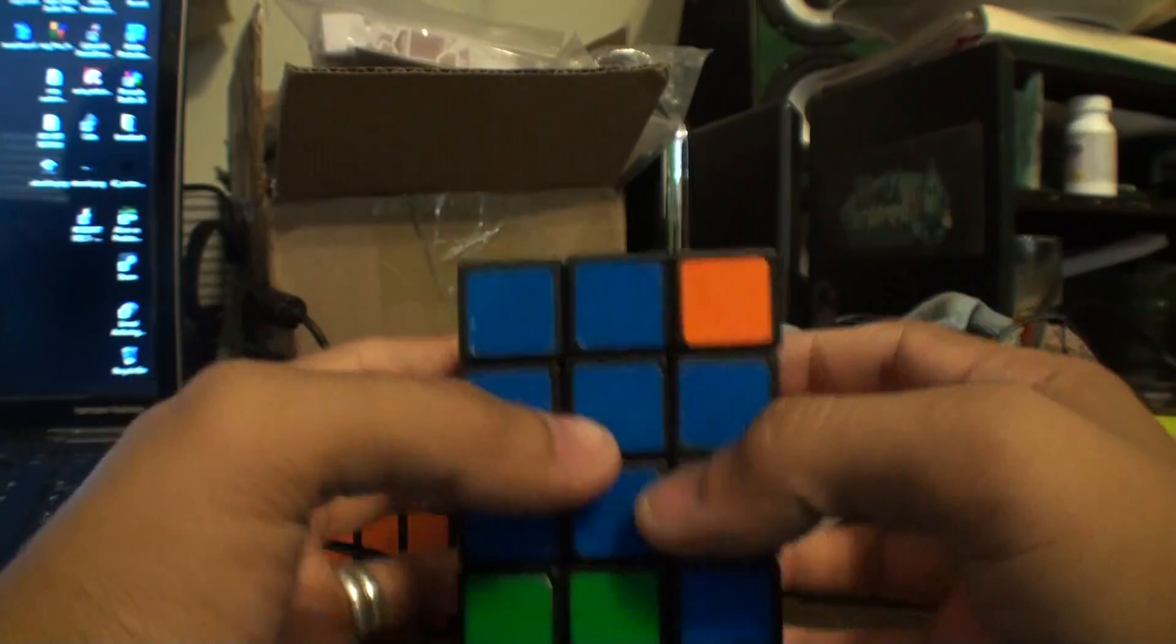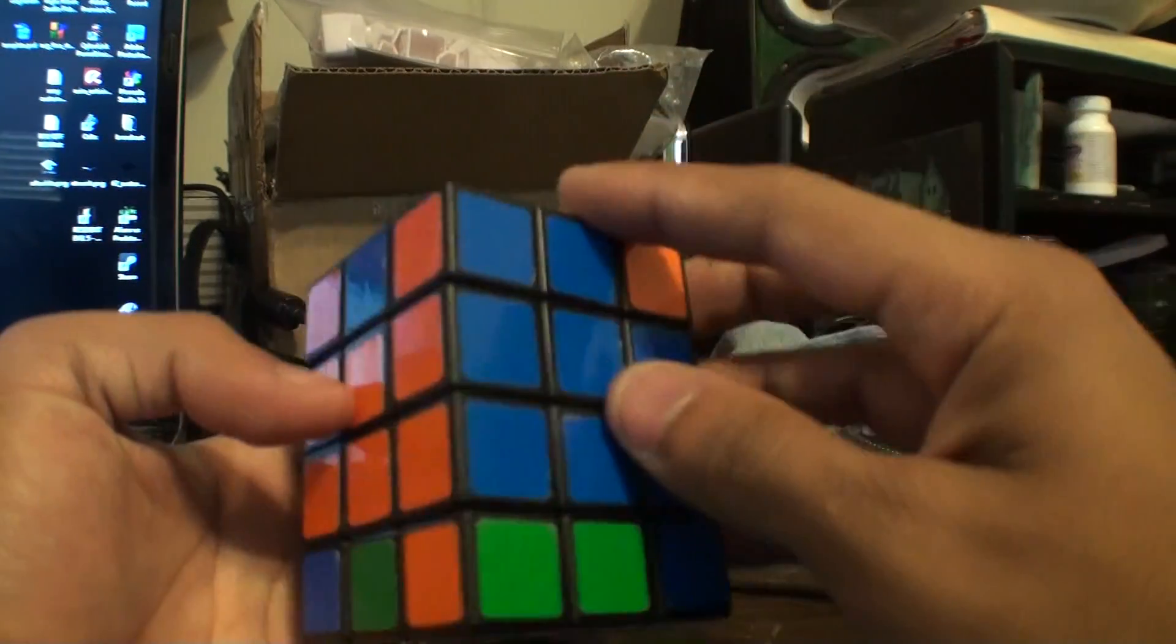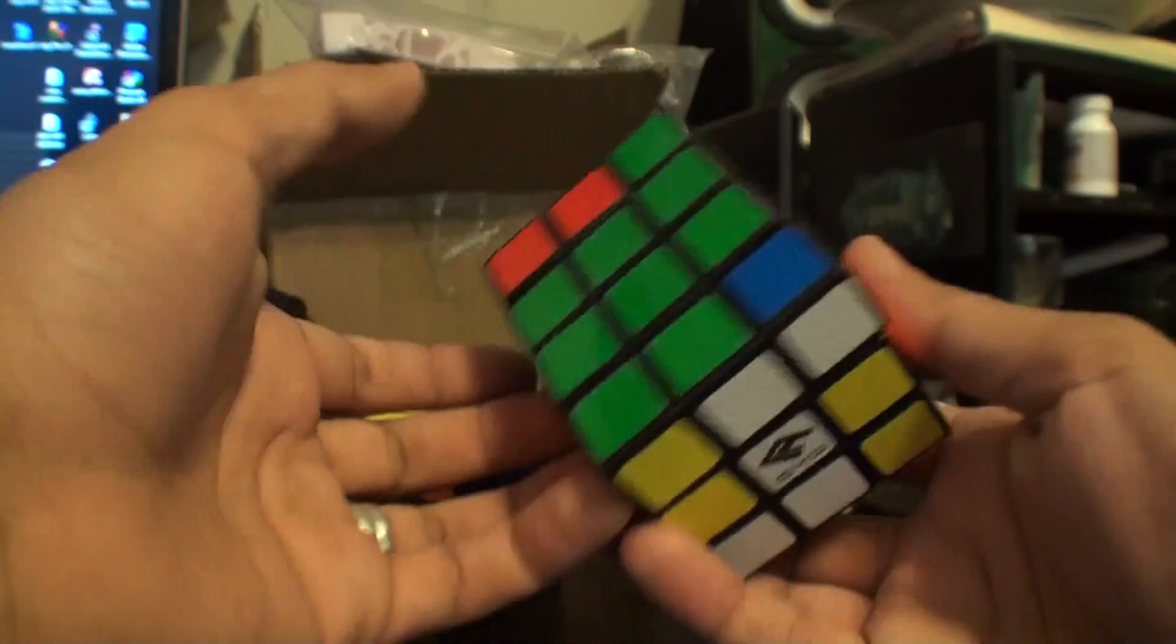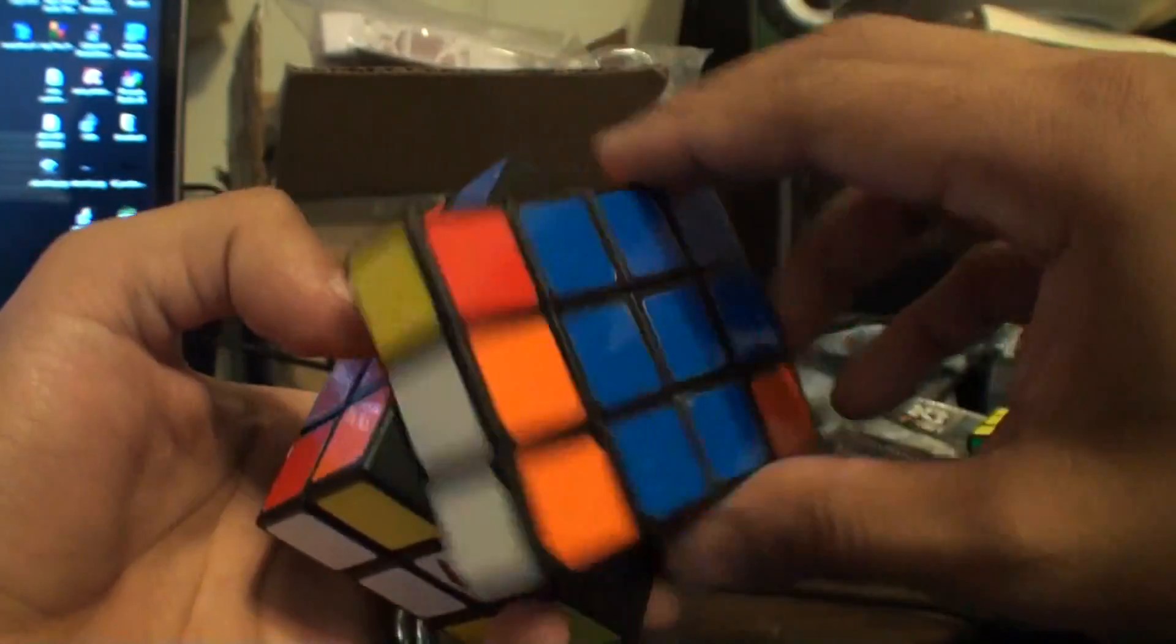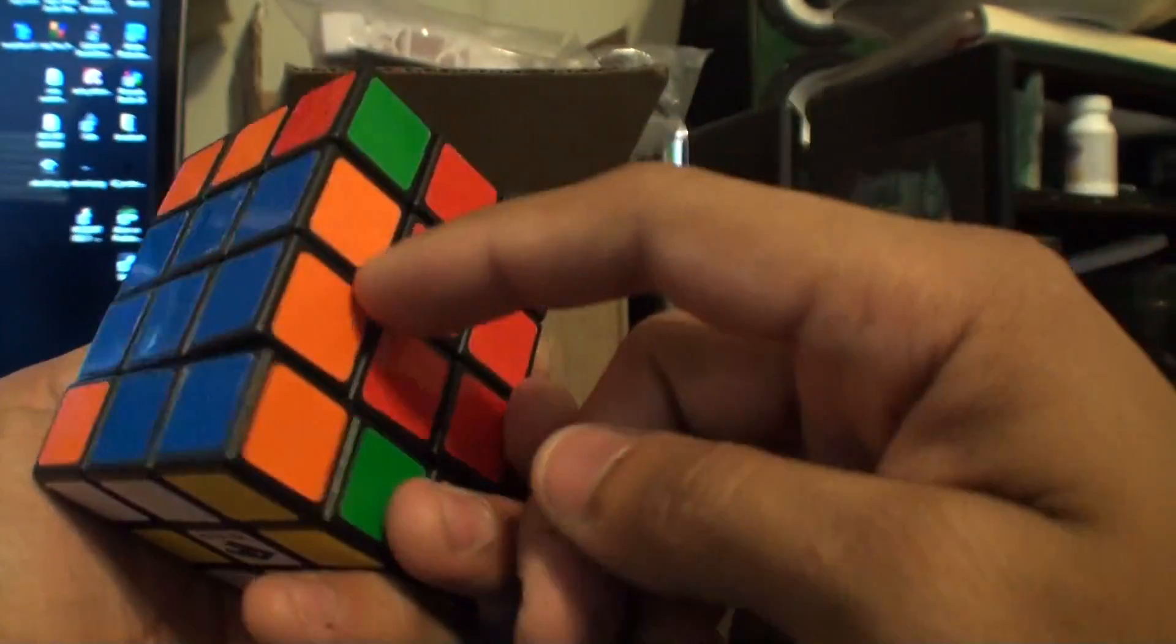And now you're going to solve your outer ones like a domino as well. So you're going to get your cross again. So we have the blue cross right here. So I'm just going to move this green to the green back here and then bring this cross down.